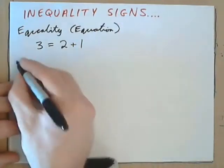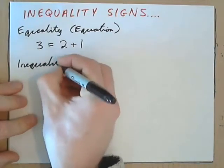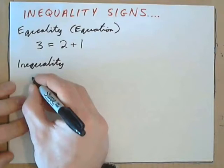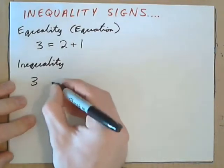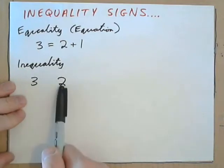So, this is an equation. An inequality is like an in-equation. For example, if you had 3 and 2. This number is more than this number.